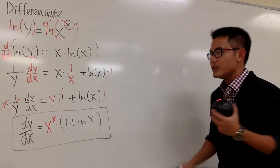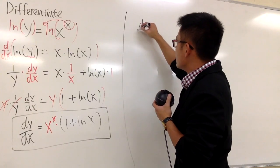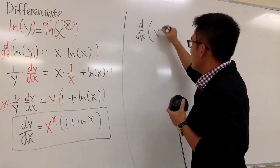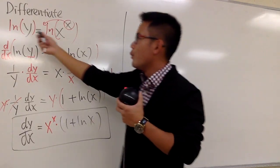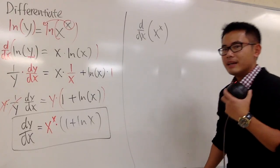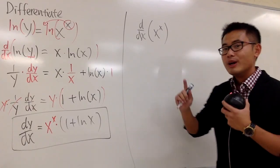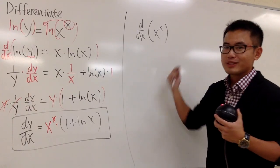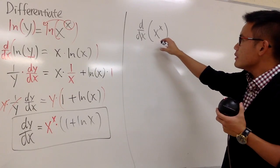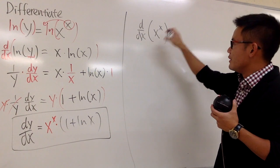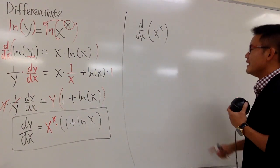Now the second way is the following, and I'll use a slightly different notation. Suppose I want to find d/dx of the function x to the x — same thing, I just called it y before. The trouble is still that we have a function to a function power. Do not bring the power to the front and minus 1 — that doesn't work. That's only for power functions like x to the 5th or x to the 7th.